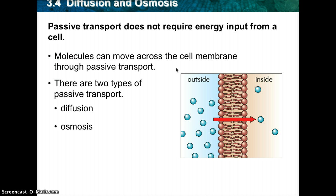We're going to talk about diffusion first. In a solution, particles move constantly. There are two types of players that create the solution: the solute and the solvent. The particles collide with one another and tend to spread out randomly. As a result, the particles tend to move from an area where they are more concentrated — concentrated means more dense — to an area of less concentration. Think of it as a slide: at the top of the slide you have a lot of molecules, and at the bottom there aren't any, so the molecules easily go right down the slide to the area where there are fewer molecules.